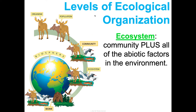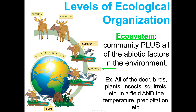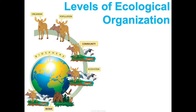When referring to an ecosystem, I mean all of the living things in the community plus all of the non-living, or abiotic, factors. So all the deer, birds, plants, insects, squirrels, and bacteria, but also looking at what does the temperature look like, what do the seasons look like, what does the precipitation level look like, the humidity — all of those non-living factors that define a given area. That would be the ecosystem.